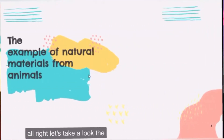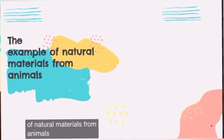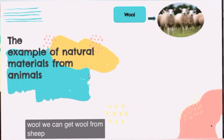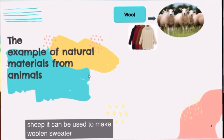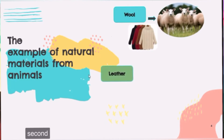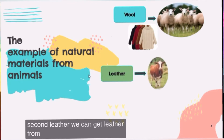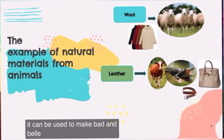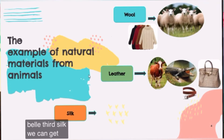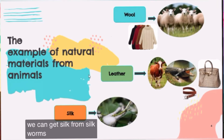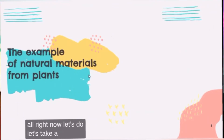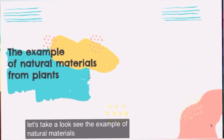Let's take a look at examples of natural materials from animals. First, wool — we can get wool from sheep, and it can be used to make woolen sweaters. Second, leather — we can get leather from cows and crocodiles, and it can be used to make bags and belts. Third, silk — we can get silk from silkworms, and it can be used to make silk dresses and silk ties.